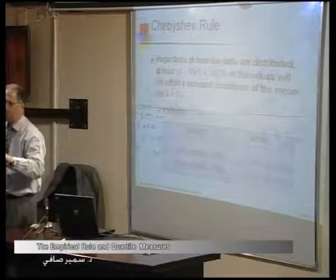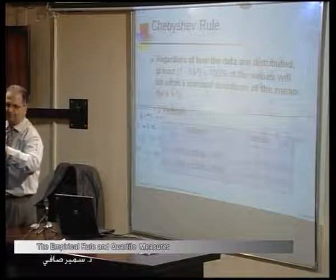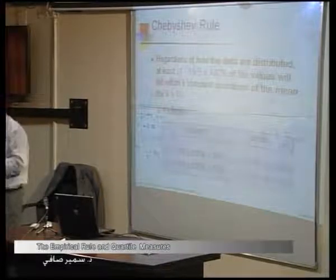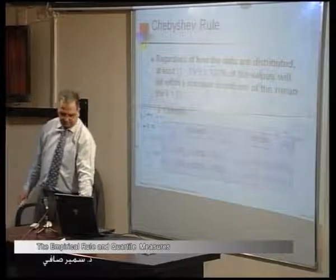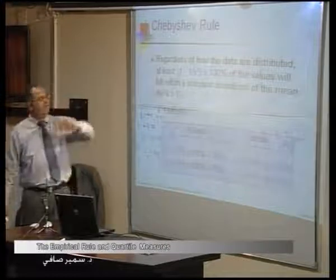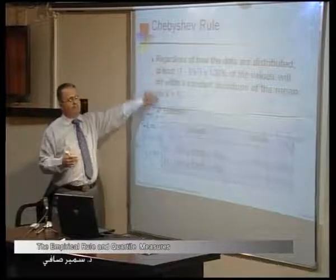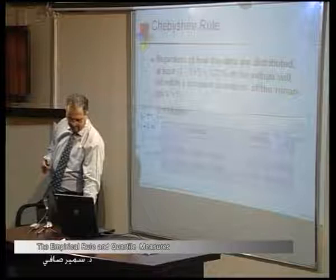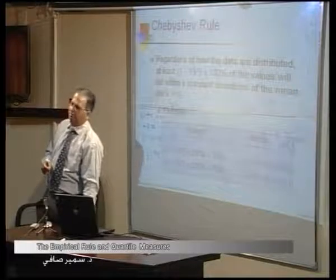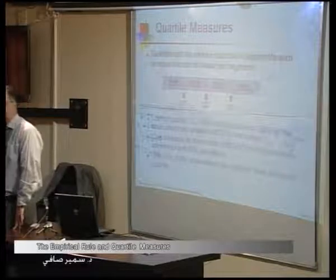So we have two scenarios: if the data is symmetric, we use the empirical rule — 68, 95, 99.7. If the data is not bell-shaped, or the distribution is unknown, we use Chebyshev's rule, regardless of the shape of the data. In reality, sometimes the data has an unknown distribution, and for this reason we must use Chebyshev's rule.